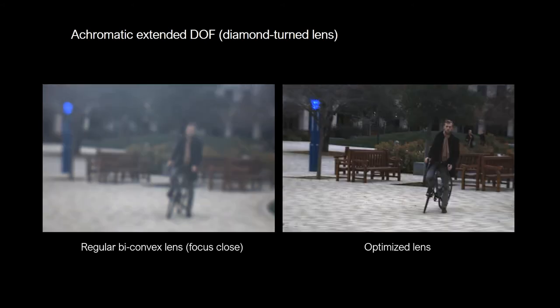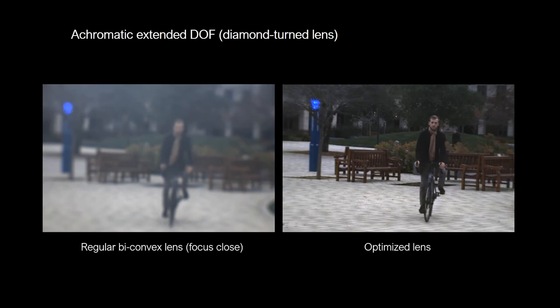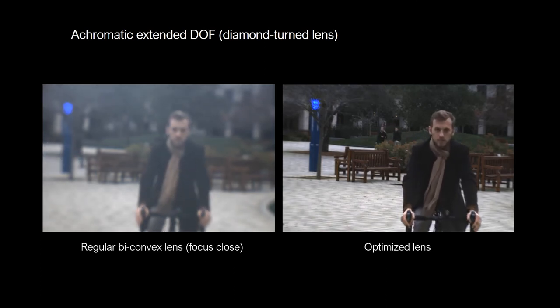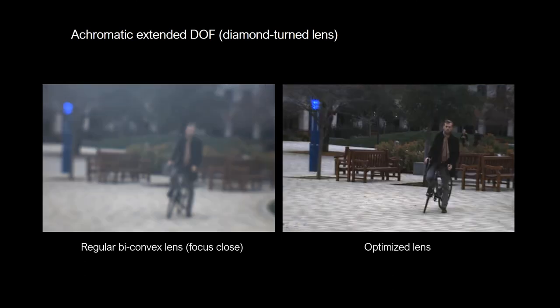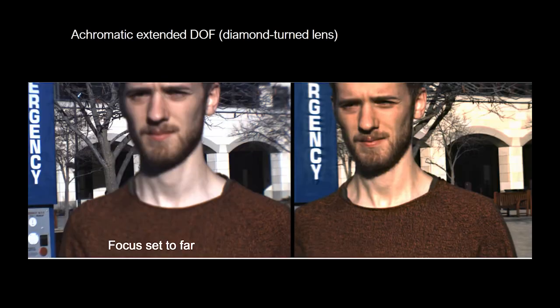Here we show videos captured outdoors with a large depth range. The optimized lens was fabricated by diamond-turning. We focused a regular bi-convex lens at one depth. We observed that our proposed lens exhibits less depth-variant blur, so as to yield a better all-in-focus result after image processing.